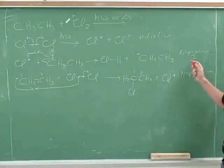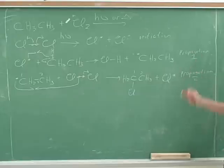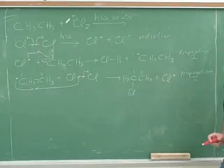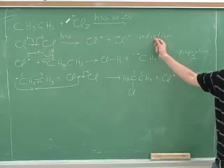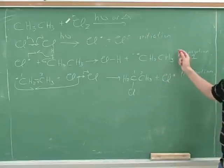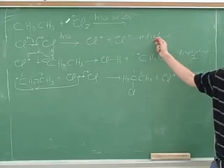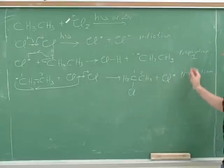Maybe now the name propagation makes more sense. This is how the chain reaction is propagating. Maybe we understand initiation as well. Notice that you only have to do one initiation step, and then you can do billions of propagation steps. You can just do one or a few initiation steps, and that will allow you to repeat this cycle of propagation billions of times.